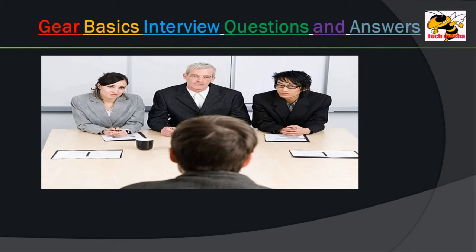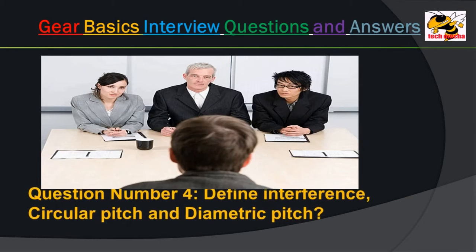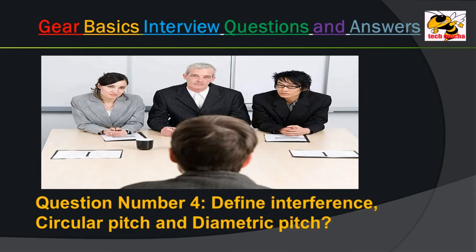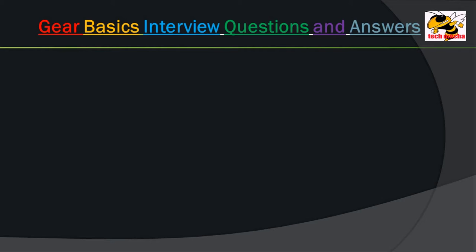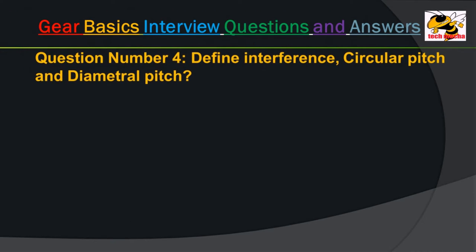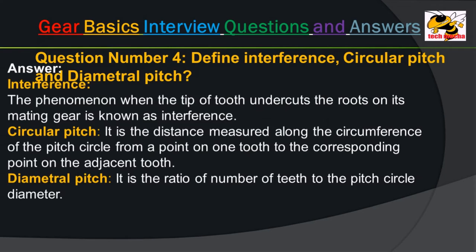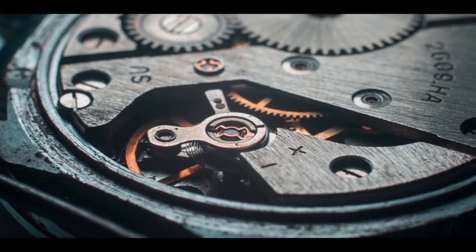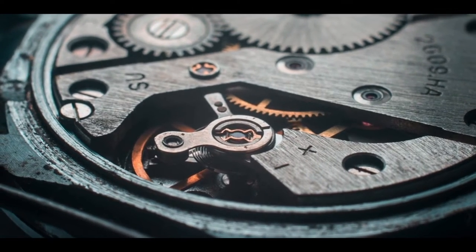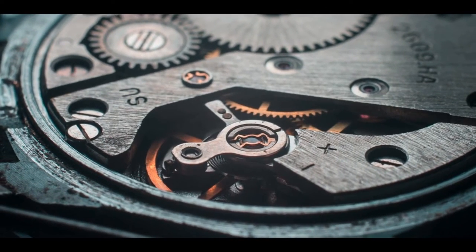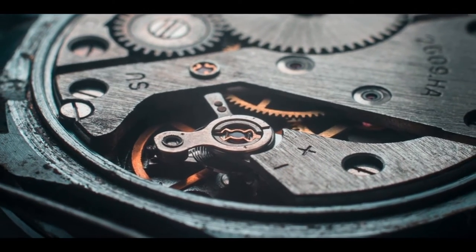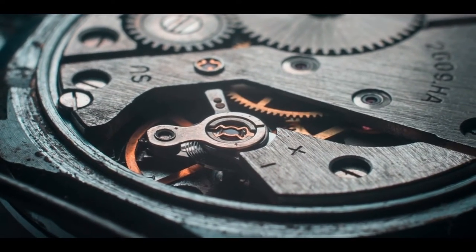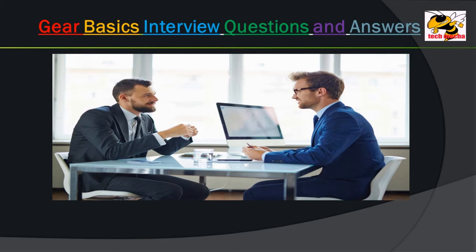Limitations of gear drive: manufacture of gears is complicated, and errors in cutting teeth may cause vibration and noise during operation. Question number 4: Define interference, circular pitch, and diametral pitch. Answer: Interference — the phenomenon when the tip of a tooth undercuts the root on its mating gear is known as interference. Circular pitch — it is the distance measured along the circumference of the pitch circle from a point on one tooth to the corresponding point on the adjacent tooth.